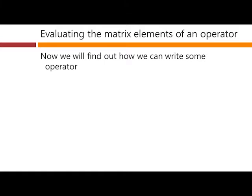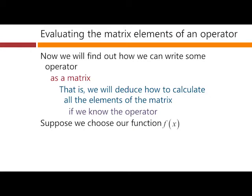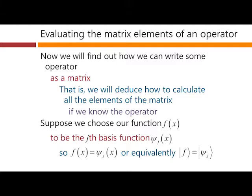Now we're going to find out how we can write some operator as a matrix. That is, we will deduce how to calculate all the elements of the matrix if we know the operator. Suppose then we choose our function f of x to be one specific one of the basis functions, we'll say ψj.